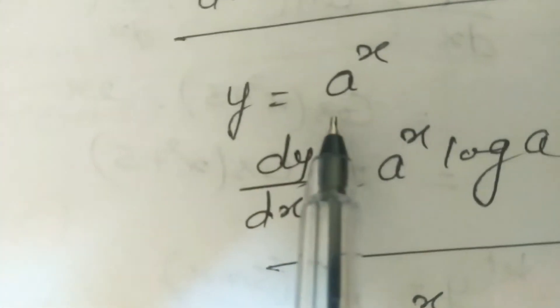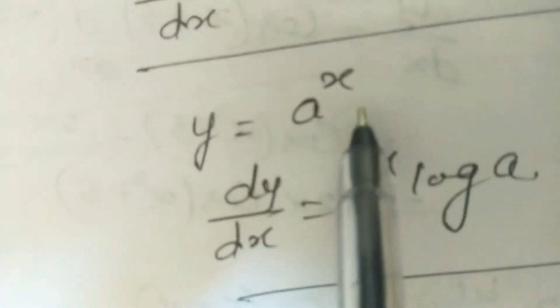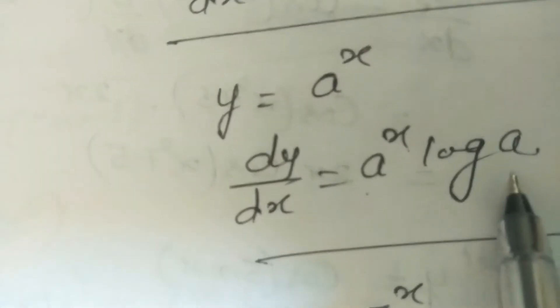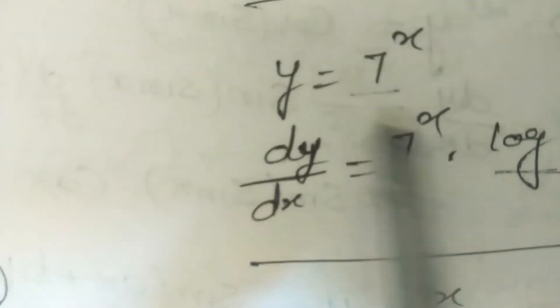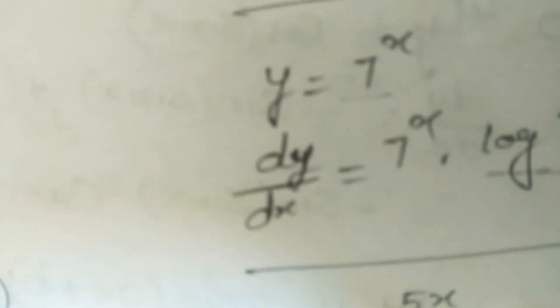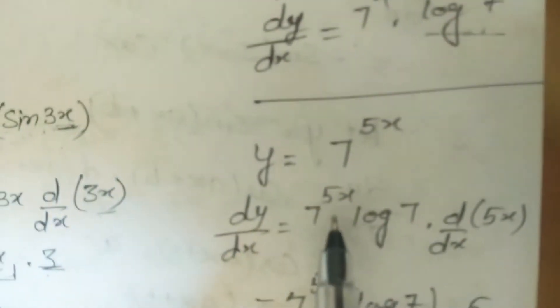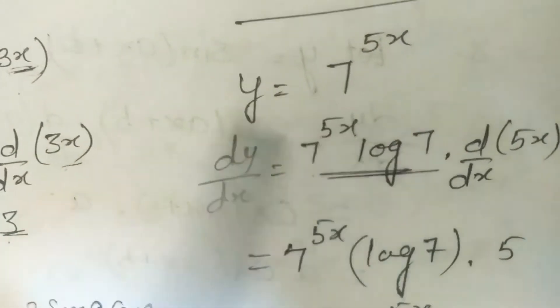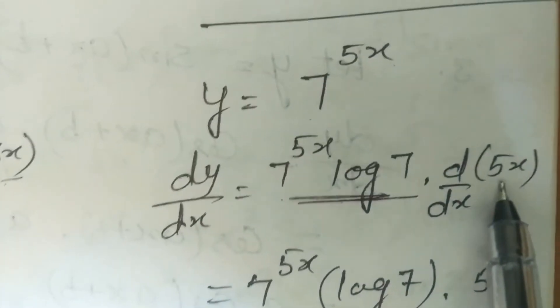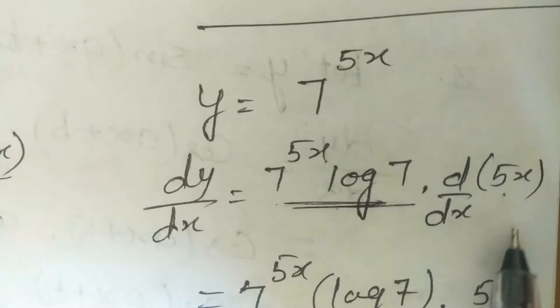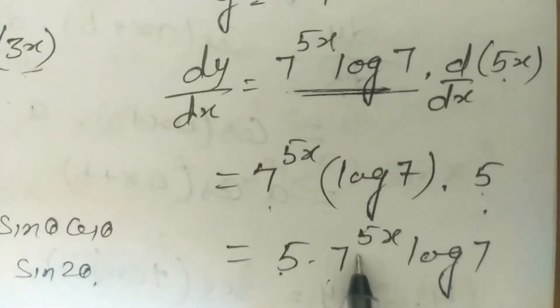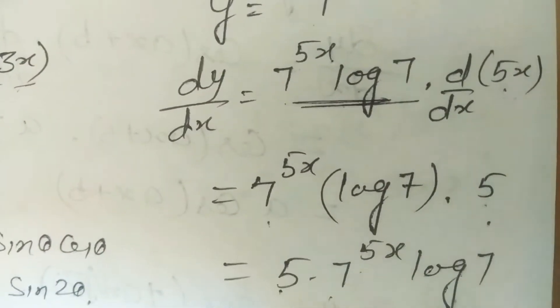Derivative of a^x is a^x · log a. For 7^x, derivative is 7^x · log 7. For 7^(5x), applying chain rule: 7^(5x) · log 7 · 5. These exponential formulae will be covered in exercise 5.4.